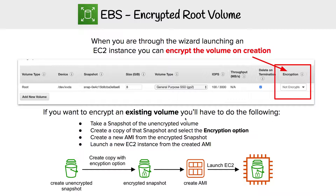What happens if we have a volume that we created that was unencrypted and now we want to apply encryption to it? We're going to have to go through a little bit more effort. The first thing we do is take a snapshot of that unencrypted volume. Then we use the copy command to create another snapshot, and with that we have the option to encrypt it — giving us an encrypted snapshot. From there, we create an AMI and launch a new EC2 instance from that AMI. That's how we get an encrypted root volume.